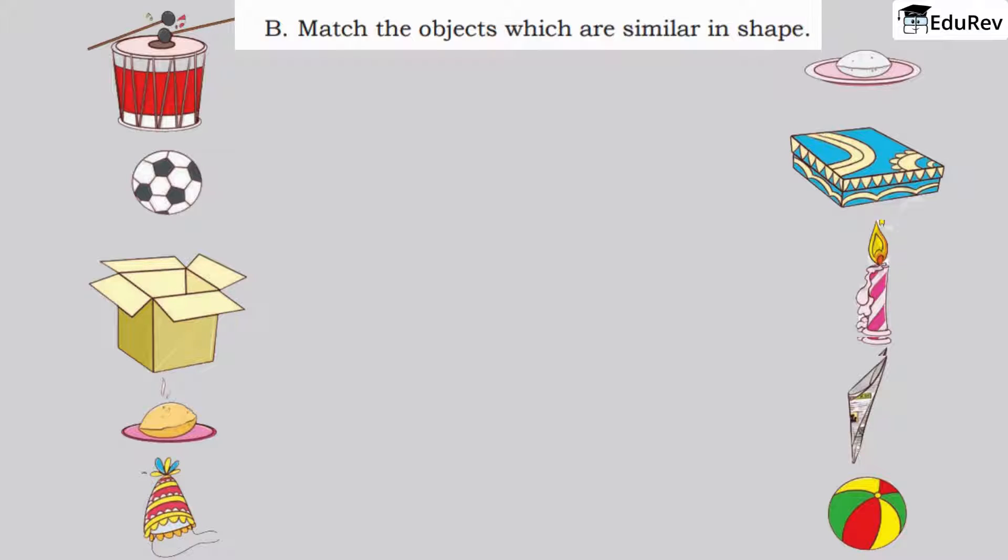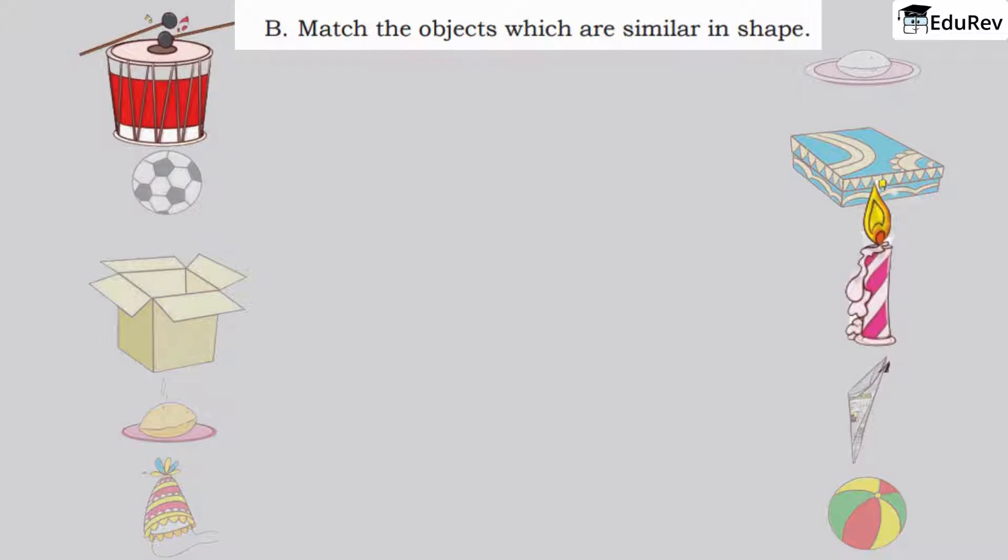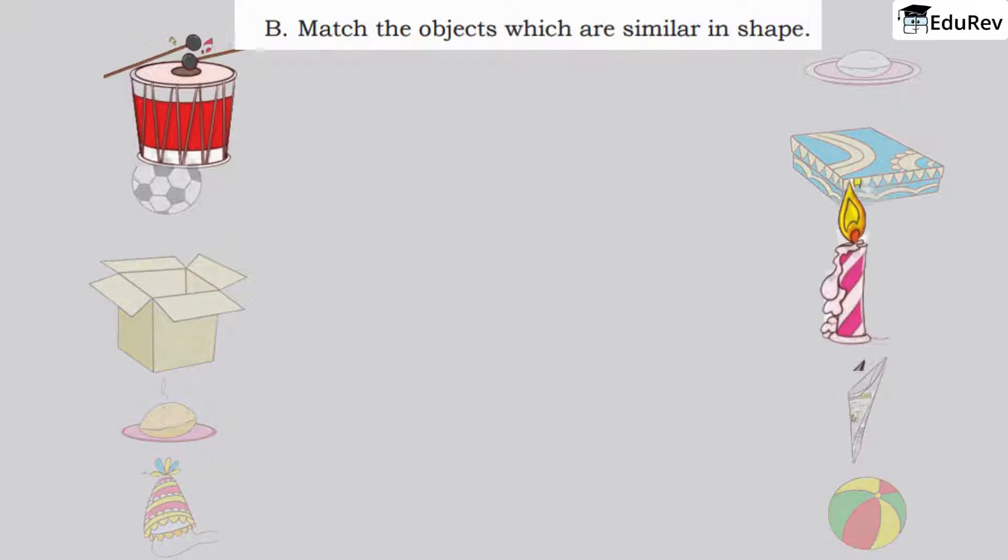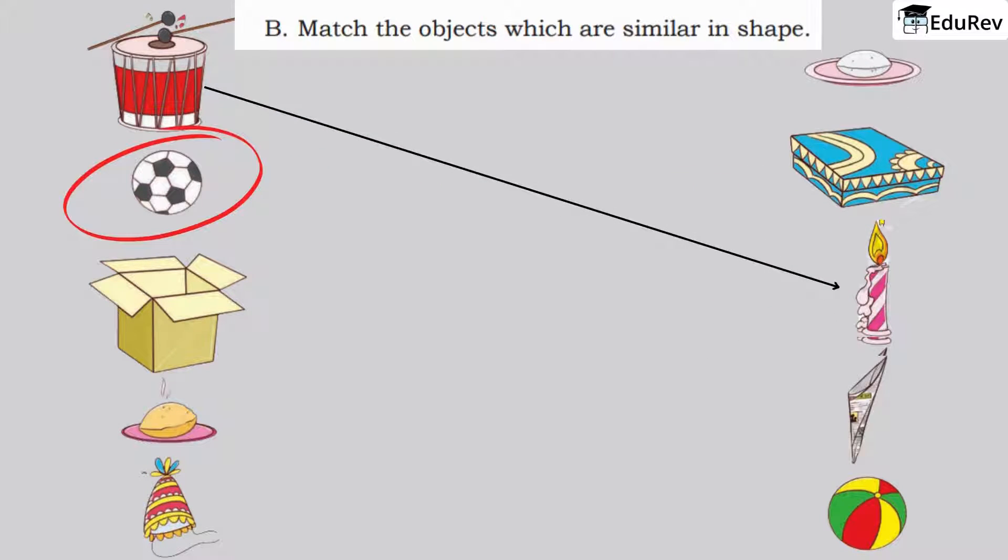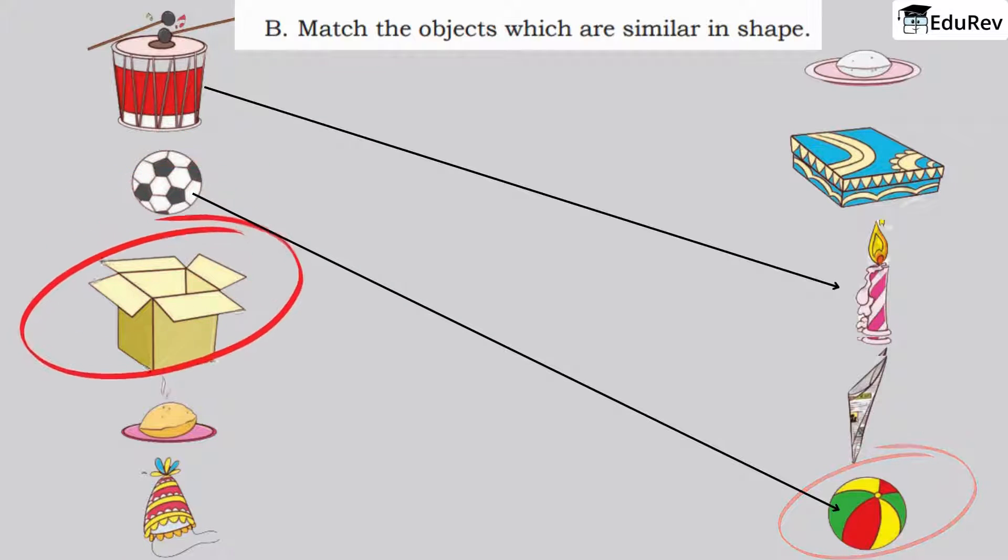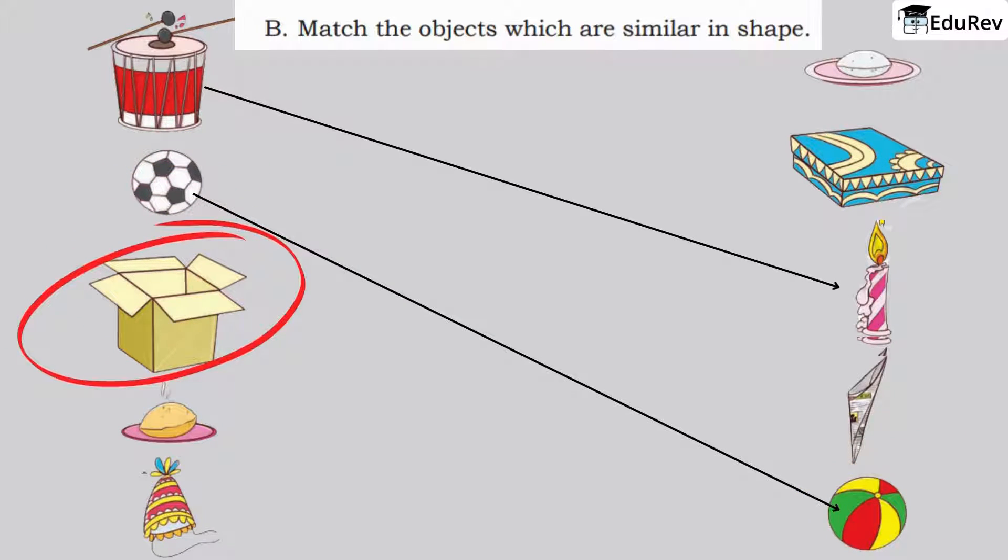The first picture is of a drum. Can you tell me what it looks like? Yes, it looks like a candle. They both are long. The second picture is a football. It is like the ball here so match it with this. The third picture is a box. It is same like the box here, so we can match it with this.